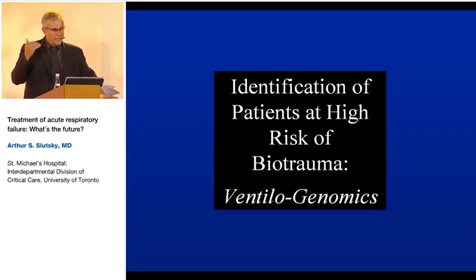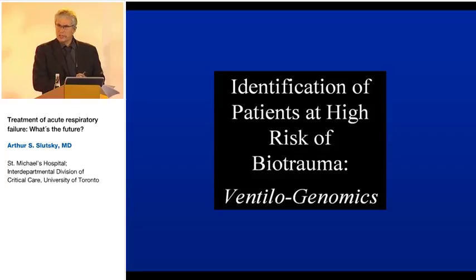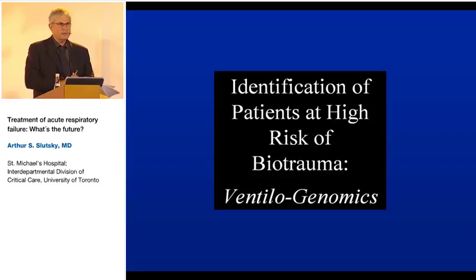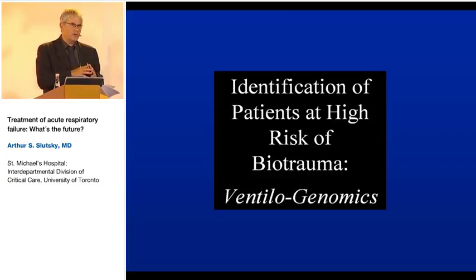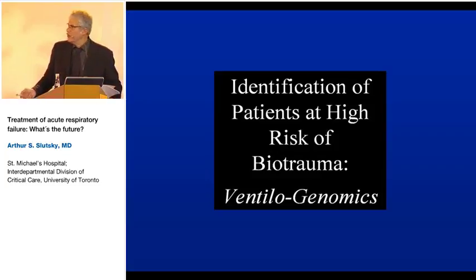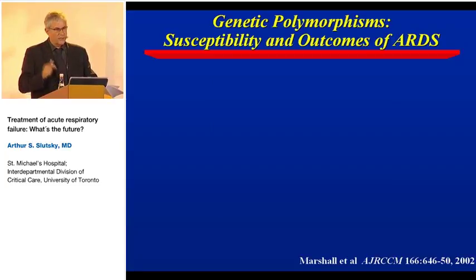Which patients might benefit from these therapies? One approach is to use therapies in patients where a fully protective ventilatory strategy cannot be achieved. Another is genomics: identifying patients at increased risk based on genetic markers — targeting them early even before manifestations appear. This is what we've called ventilogenomics. Just as pharmacogenomics tailors drug therapy, ventilogenomics might tailor ventilatory and adjunct therapies to mitigate ventilator-induced lung injury in those at genetic risk.